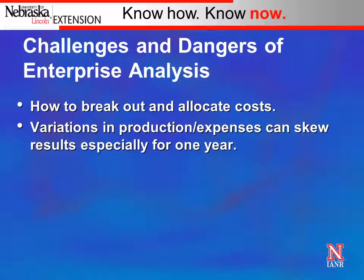Another thing to be careful of is variation in production and expense that can skew results, especially in a single year. In 2015, if you sold calves in the fall, the cow-calf enterprise probably looked really good due to high revenue. Similarly, in 2012 the hay enterprise likely looked good. So look at enterprises over several years, recognize the variation occurring in production or expenses, and use that to evaluate whether an enterprise should remain in your mix or how it might be changed to better meet your goals.